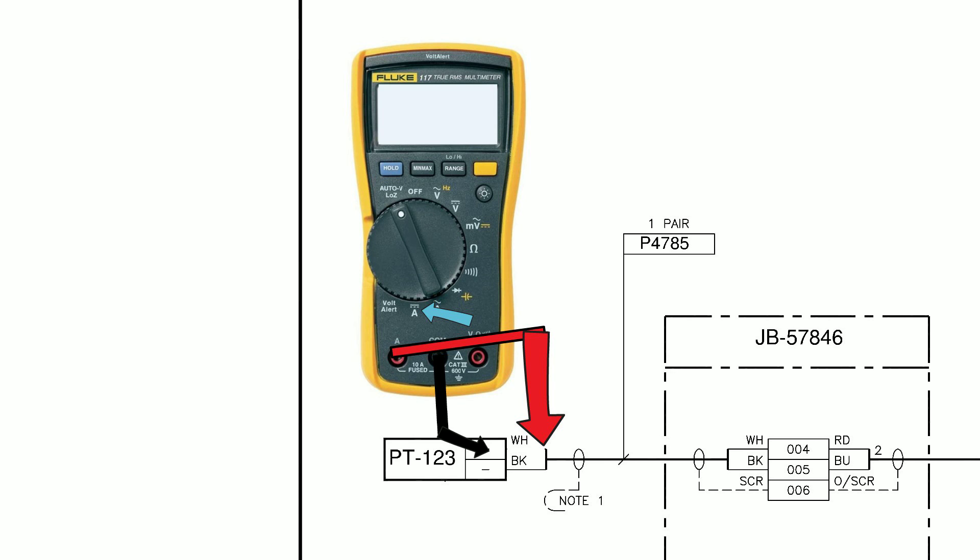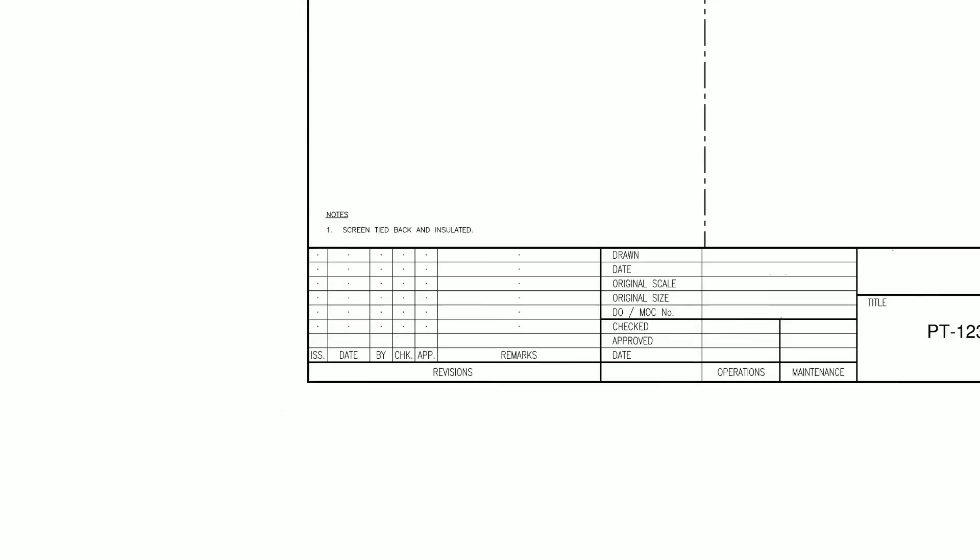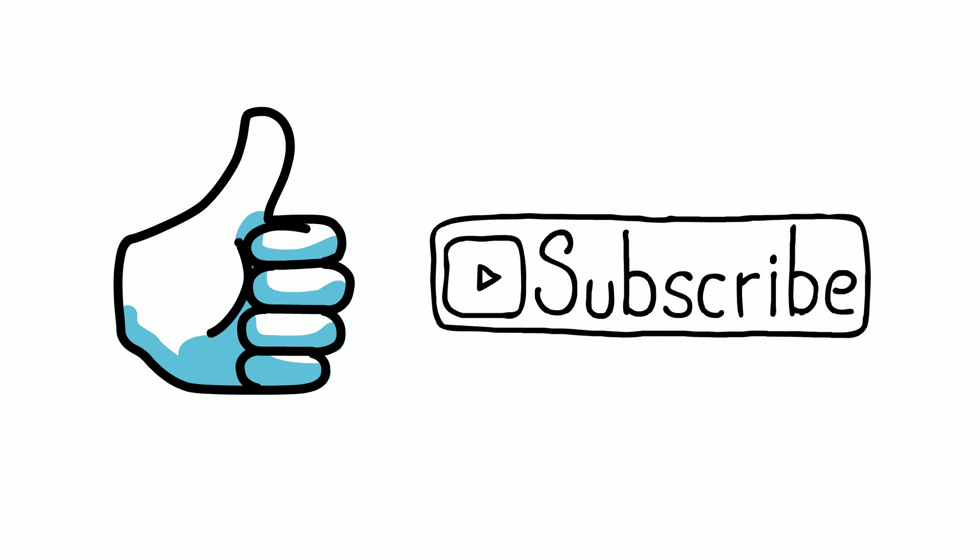If you are interested in purchasing the Fluke 117, check the link in the description to Amazon for this meter. If you do decide to make a purchase, please go through the link as I'll get a small commission and it won't cost you any more than if you had navigated there yourself. I hope you have enjoyed and found this video helpful — if you have, please go ahead and press the like button and subscribe with notifications for great content in the future. Thank you.